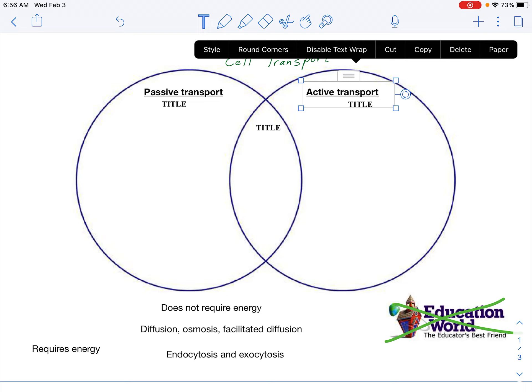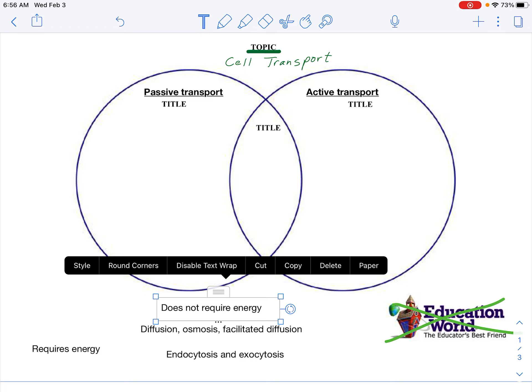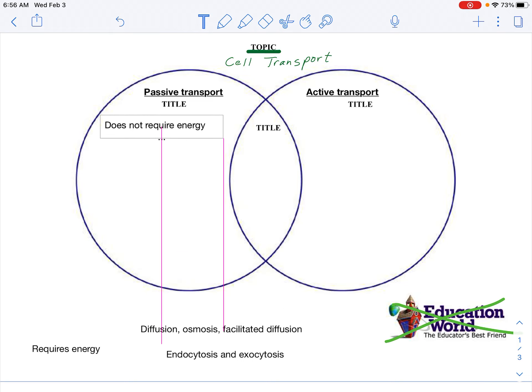Dragging these different things into the correct sides. So passive transport, if you remember from your lesson outline, that is transport that does not use energy from the cell. So you would simply highlight that box and drag it into the passive transport side.